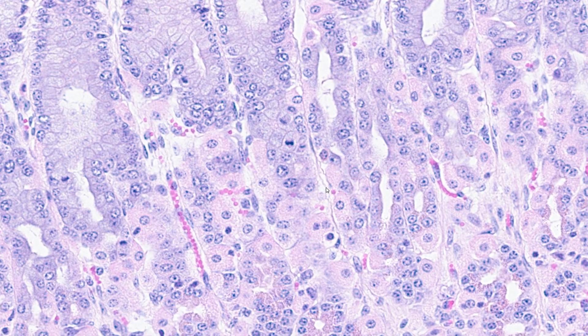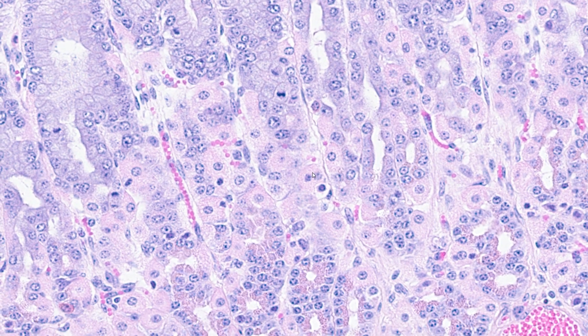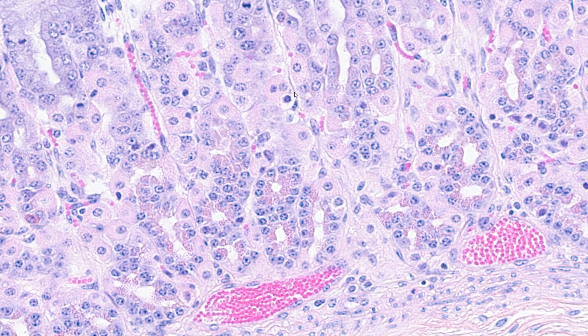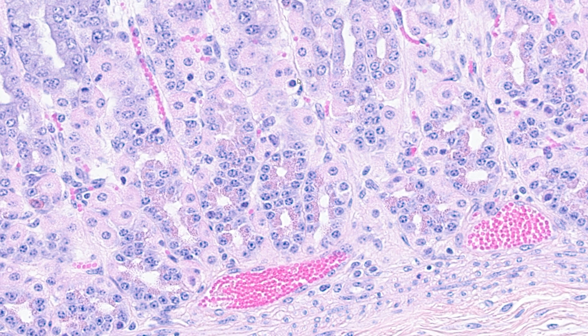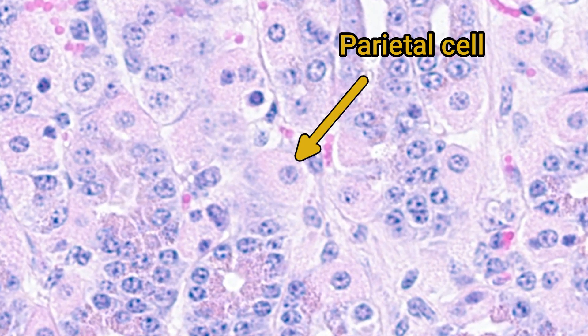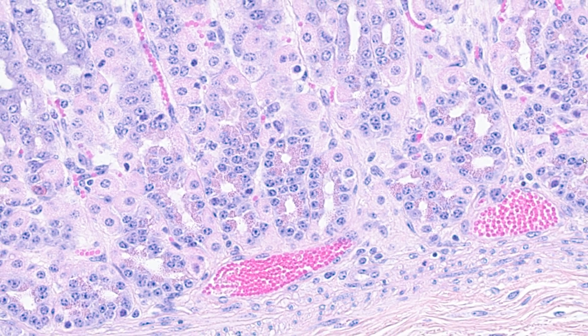As we move down into the mucosa you'll notice the cell morphology begins to change. The easiest cell type to find are the parietal cells, sometimes called oxyntic cells. They are round, plump and have very distinctive bright eosinophilic cytoplasm. These are the cells that secrete gastric acid. They also produce intrinsic factor, which is necessary for the absorption of vitamin B12 in the small intestine.